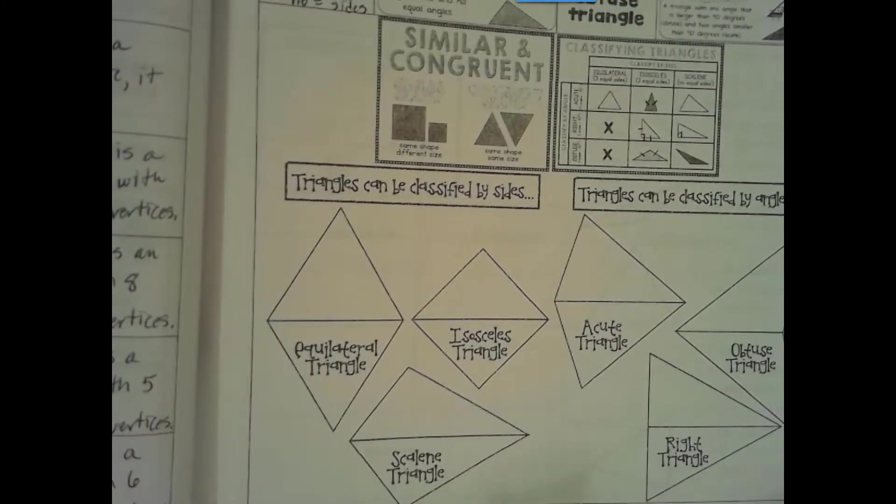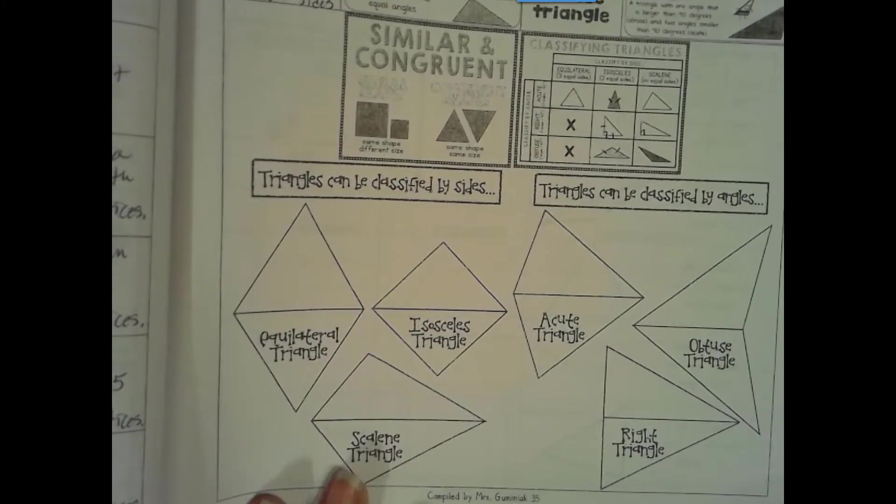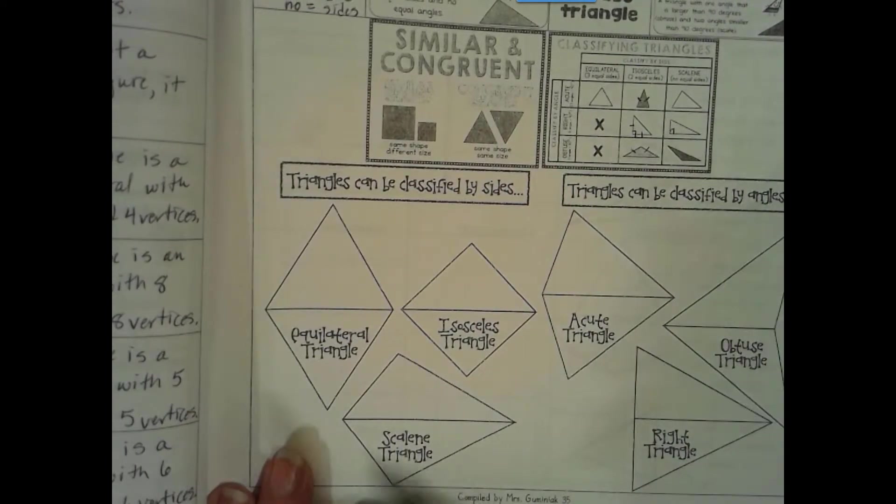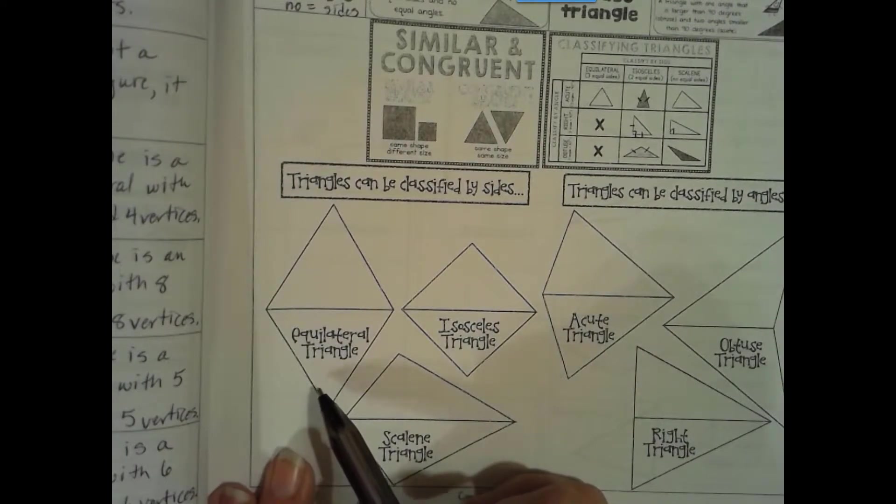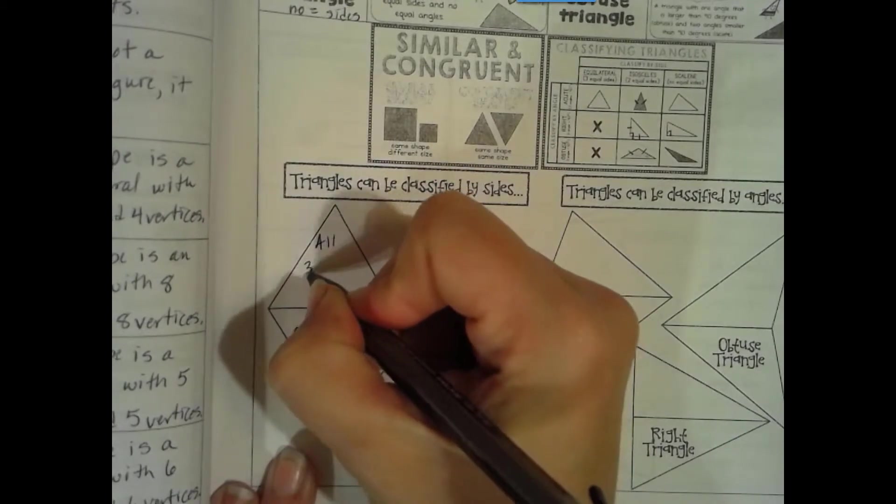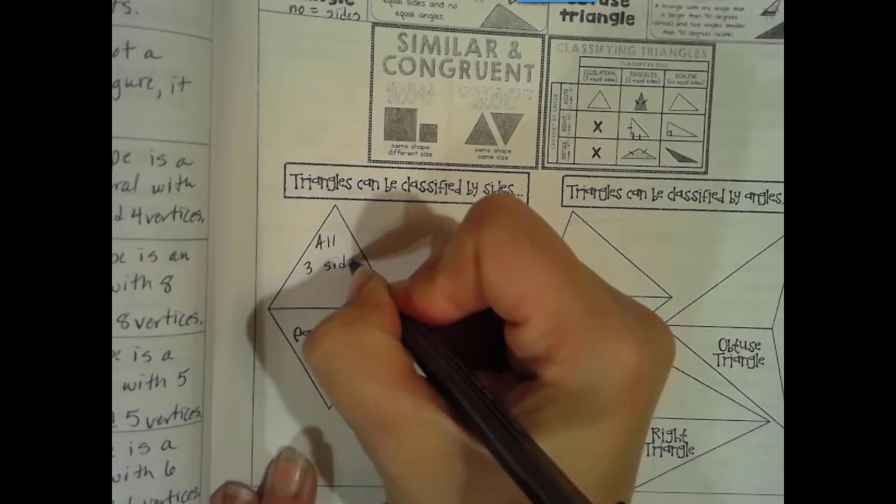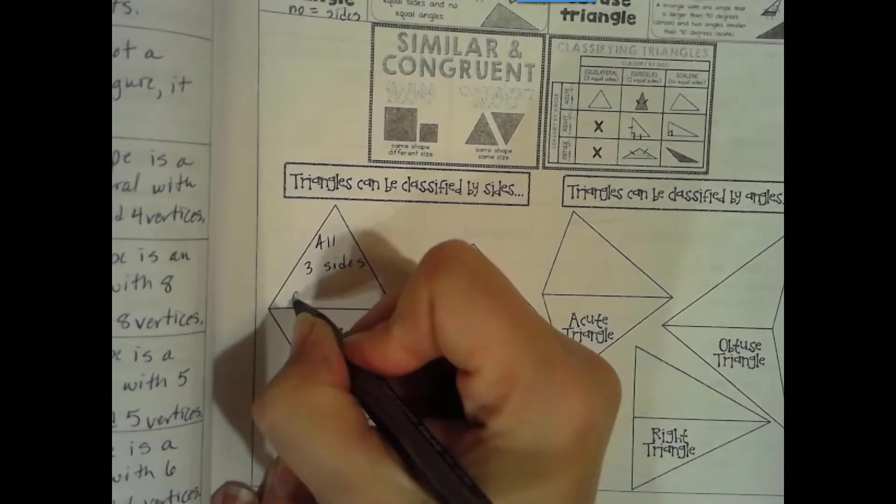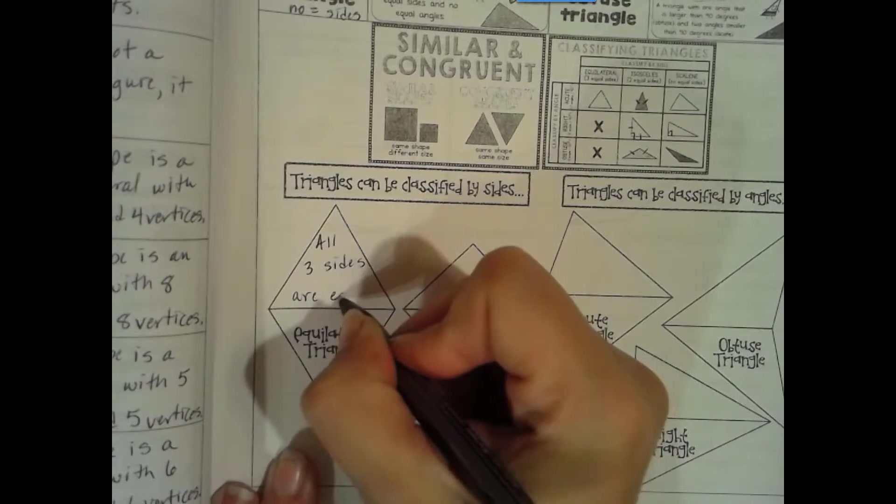All right. So just to remember the key things for these triangles. To be an equilateral triangle, all three sides are equal.